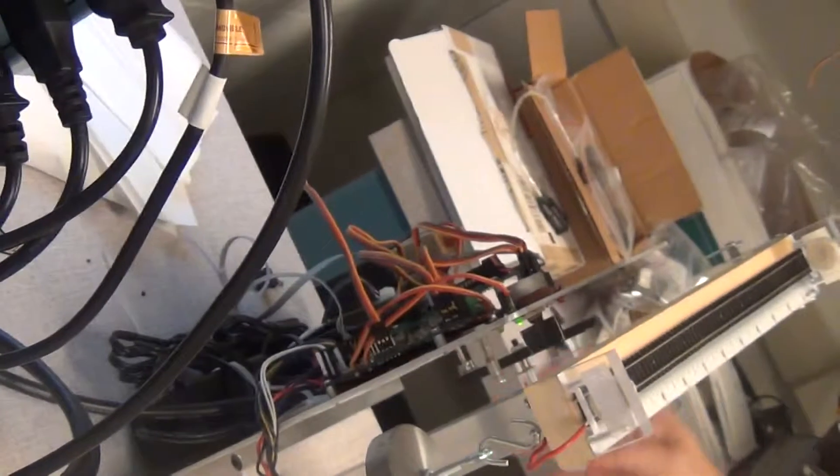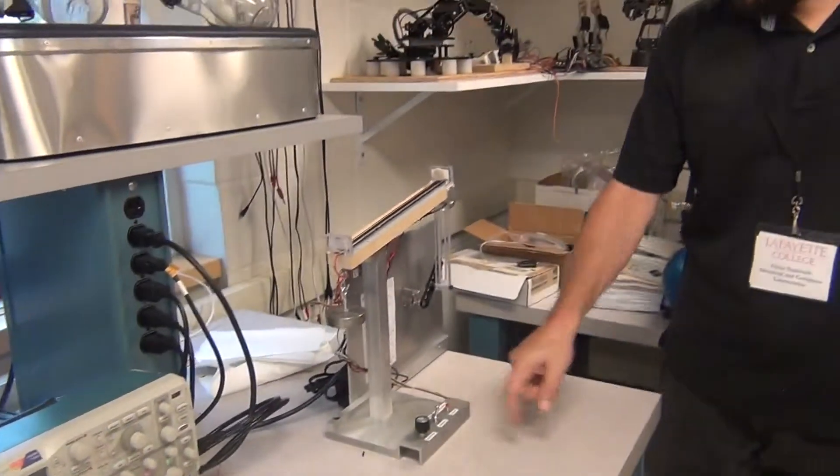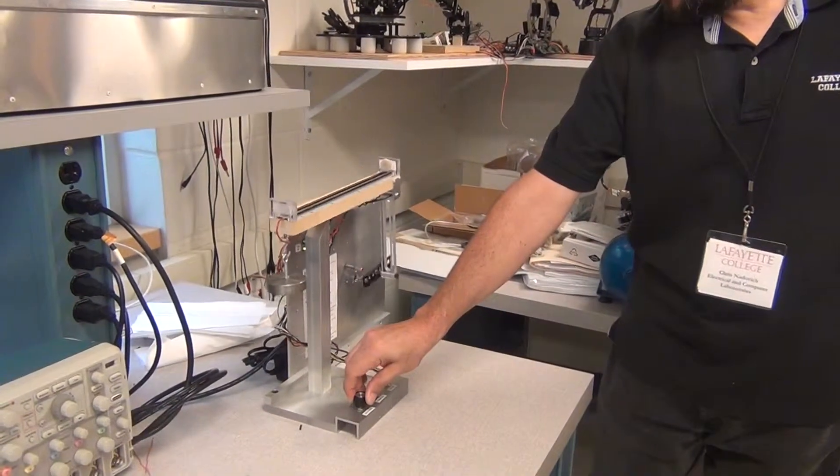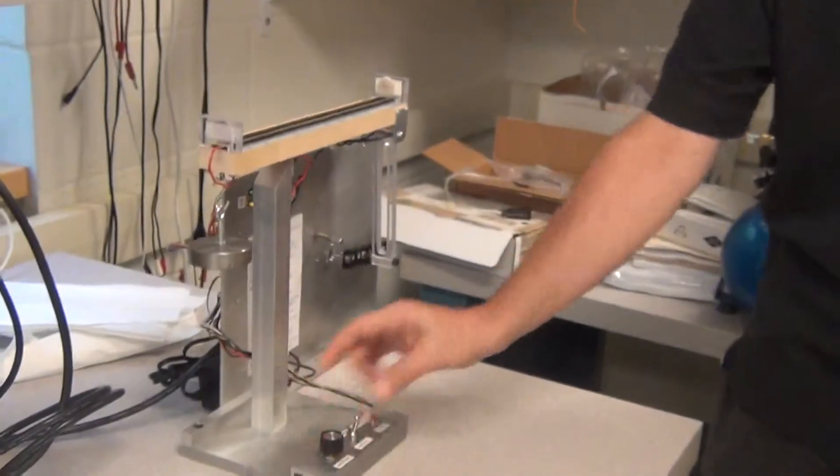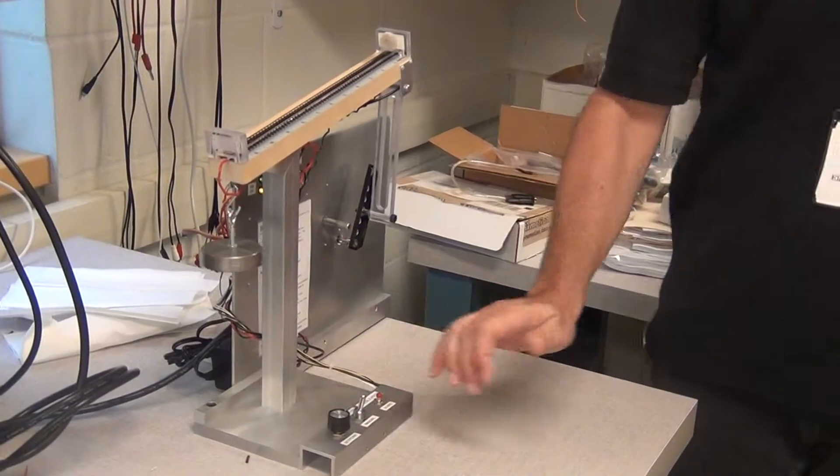So if I turn this thing on by pushing this button, this knob is way over here. I wonder if that's going to be okay. I guess it is. Okay, so what happens now is just by turning this knob, I can control the position of that arm. No big deal, right? That's not really that big a deal.